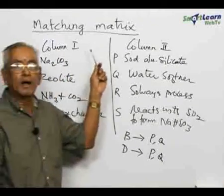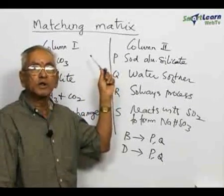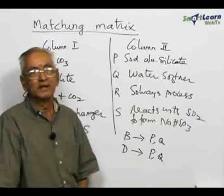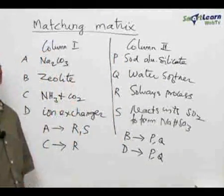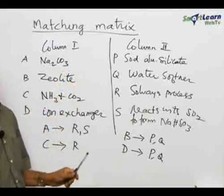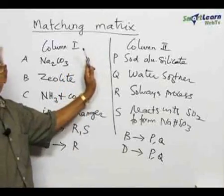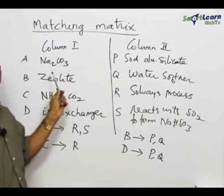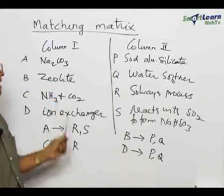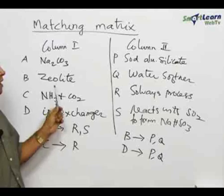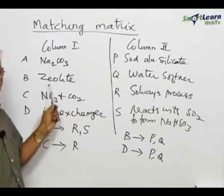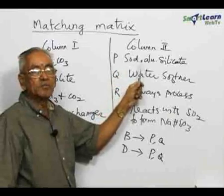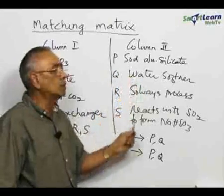Now, we are going to another class of questions, another group of questions which is known as the matching matrix. In this group of questions, two columns are given — one column on the left hand side and the other column on the right hand side. The left hand side column contains four items labeled as A, B, C, and D, and on the right hand side column we have P, Q, R, and S.